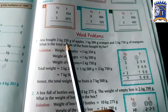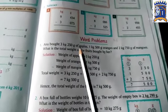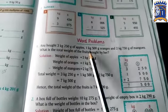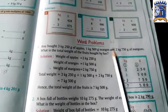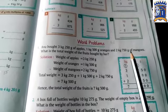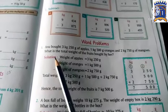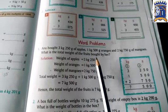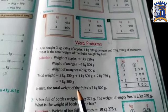First one is Anu bought 3 kg 250 gram of apples, 1 kg 500 gram oranges, and 2 kg 750 gram of mangoes. Now what is the total weight of the fruits bought by her?